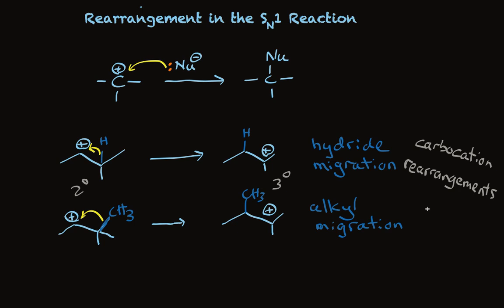But the point is that carbocations, once formed, will look for some way to become more stable. And there are two options that we've discussed so far. One is to add a nucleophile as substitution. The other is to undergo a rearrangement to make a more stable carbocation from a less stable carbocation.